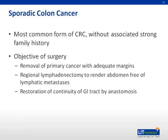It is important to recognize the increased risk for cancer in patients with hereditary cancer syndromes, but by far the most common form of colon cancer is sporadic in nature without an associated strong family history. The objective of surgery for colon adenocarcinoma is the removal of the primary cancer with adequate margins, regional lymphadenectomy to the greatest extent possible in order to render the abdomen free of lymphatic metastasis if possible, and restoration of the continuity of the gastrointestinal tract by anastomosis.